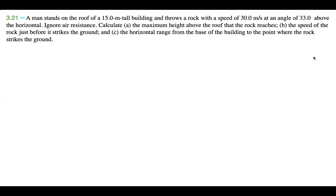Hi guys. Today I have with me problem 3.21 from Young and Friedman's University Physics textbook. A man stands on the roof of a 15-meter-tall building and throws a rock with a speed of 30 meters per second at an angle of 33 degrees above the horizontal. Ignore air resistance.